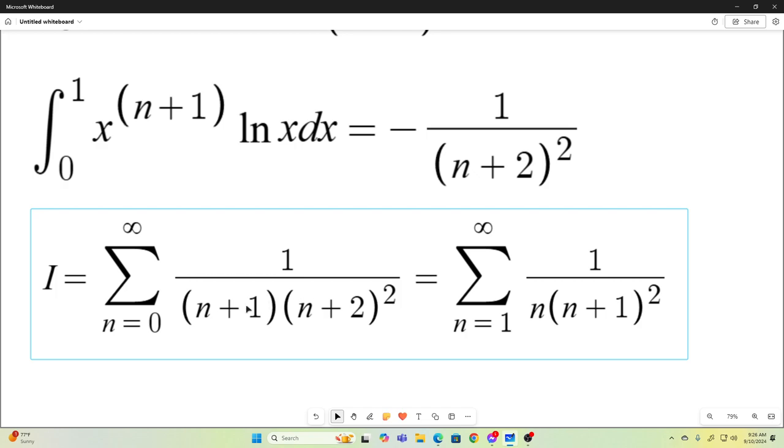And then you can see what I did. It originally transforms into this. And then I add 1 to the index on n and subtract 1 from all the n terms inside the sum. So, those two sums are equivalent. And they are both equal to the value of our original integral.